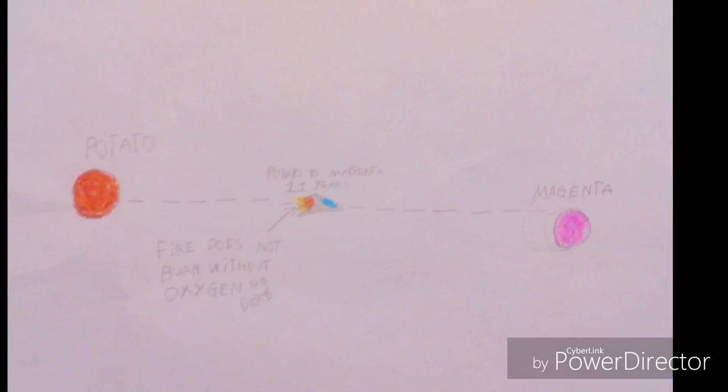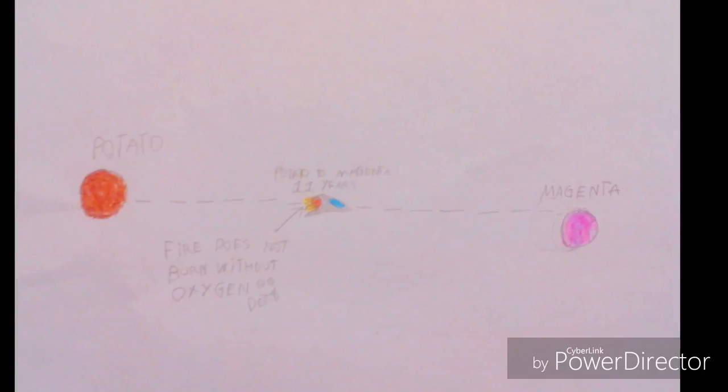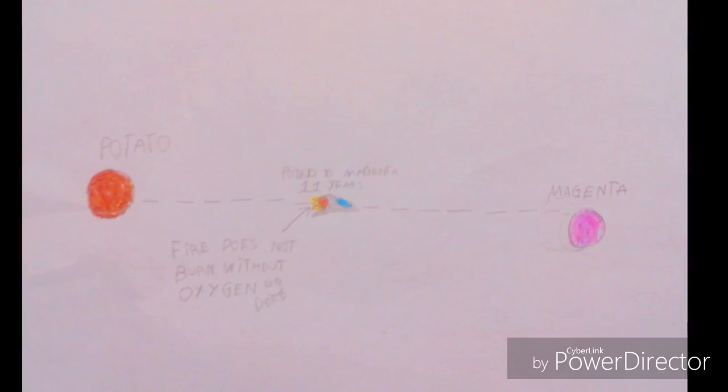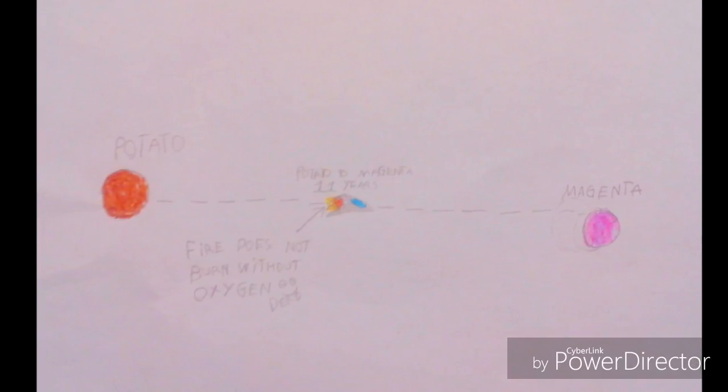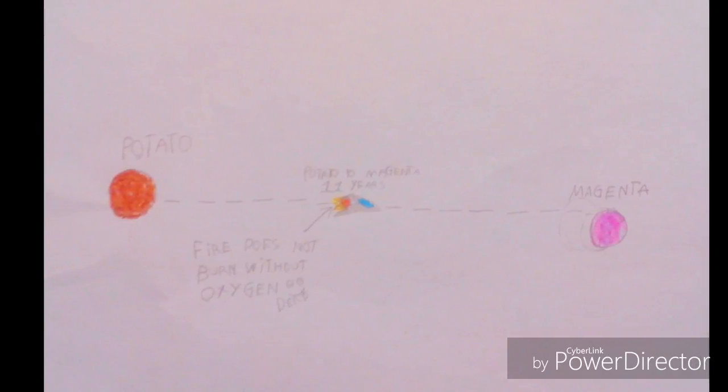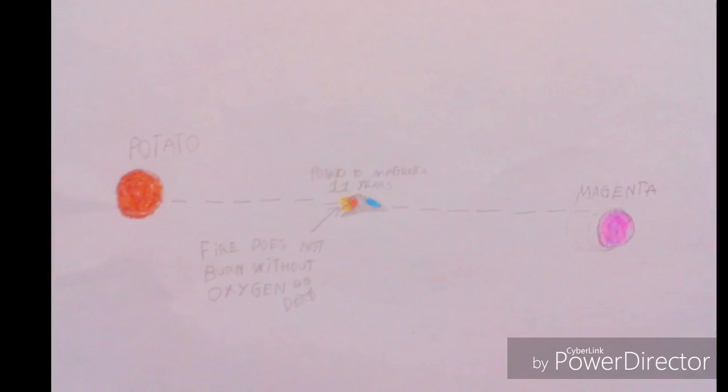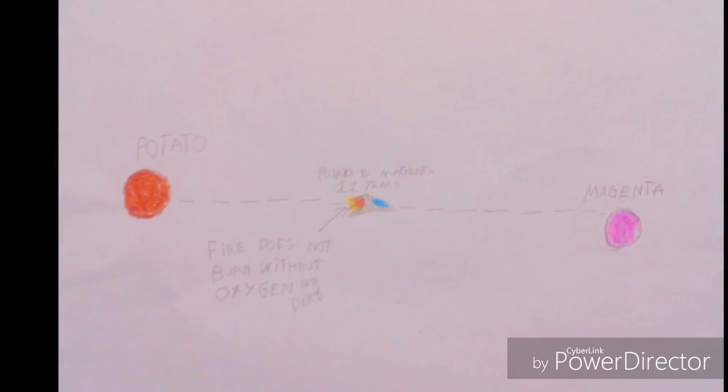Let's say we are astronauts and we are going from our home planet, Potato, to the planet Magenta. Now if we travel by just pure rocket fuel, it's going to take us 11 years. But what if we used a wormhole?